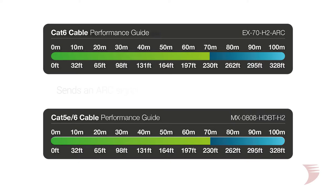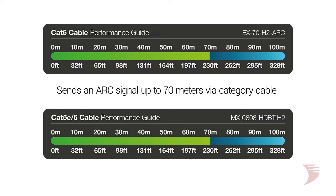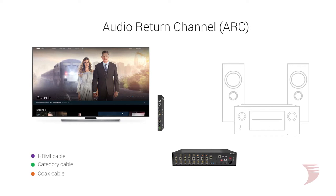With both extender and matrix solutions, the user will have the capability to send an ARC signal up to 70 meters bidirectionally over category cable. This allows ARC to be extracted from either the display or the source to accommodate the location of the AV receiver. The digital audio can either be extracted via HDMI or TOS link cable for further accommodations.